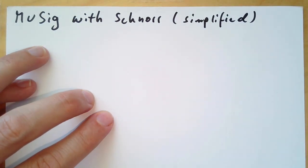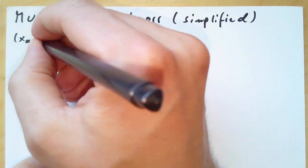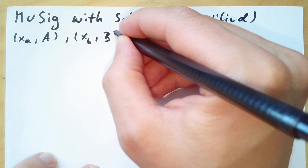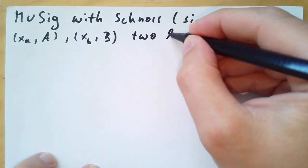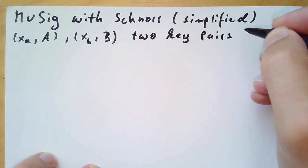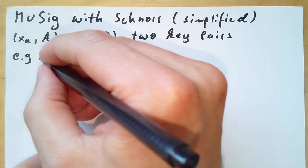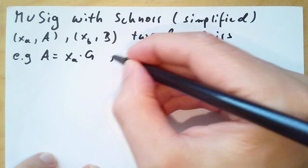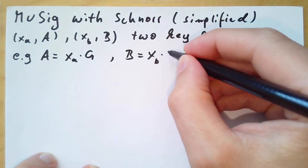As we recall from last video, we take two key pairs: xa and A, and xb and B be the second key pair. Big A and big B you can think of them as bitcoin addresses. We know A equals xa times our generator point and B equals xb times our generator point.